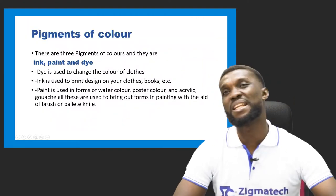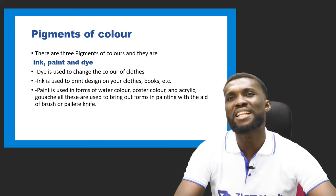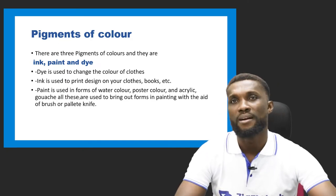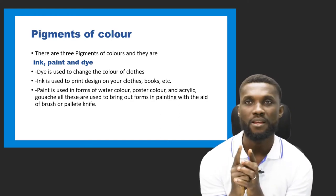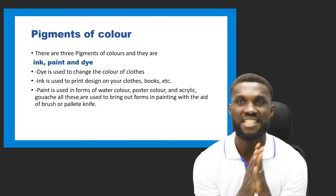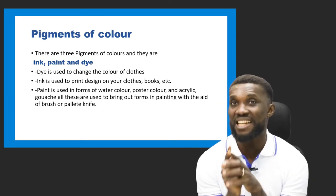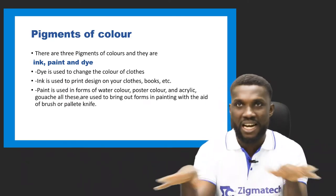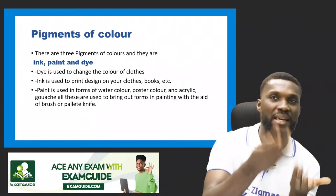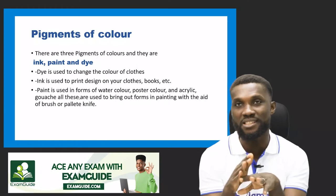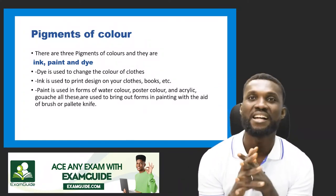Now let's talk about the pigments of color. There are three major pigments of color: number one is ink, number two is paint, and number three is dye. They are not in any order — you can say dye, paint, and ink, or paint, ink, and dye. Just know that the pigments of color are ink, paint, and dye.